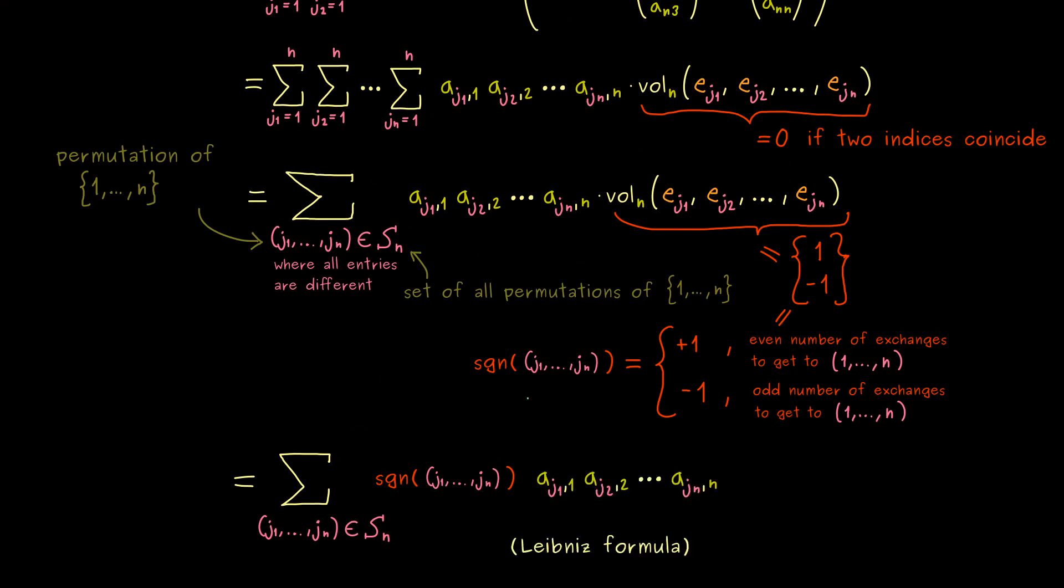And actually, this nice compact formula for the volume form is called the Leibniz formula. And now please recall we want to define the determinant by using this volume form. In other words, you can read this Leibniz formula as the definition for the determinant of a square matrix.